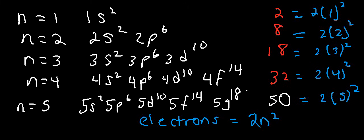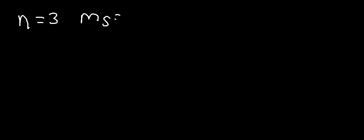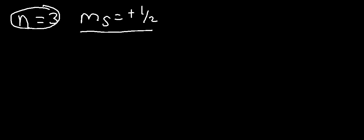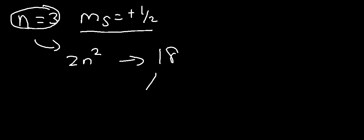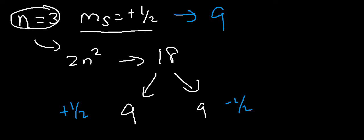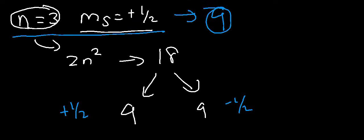That's how you can find the maximum number of electrons in any energy level. Now let's consider the second case: when you're given the value of N and the value of MS. Whenever you're given the value of MS, it's simply half of the previous result. In the third energy level, the maximum number is 2N² = 18 electrons. Half of the 18 will have an electron spin of plus 1/2, and the other 9 will have a spin of minus 1/2. So the answer is 9 electrons.